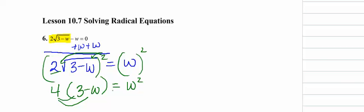Now let's clear the parentheses and distribute the 4 into that group. So 4 times 3 is 12 minus 4 times W is 4W equals W squared.